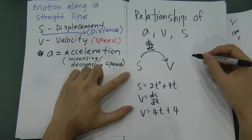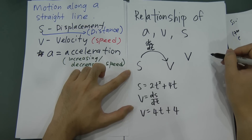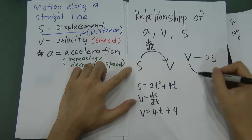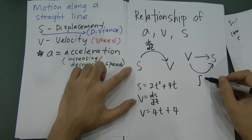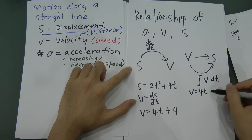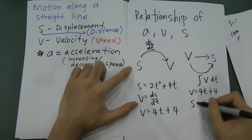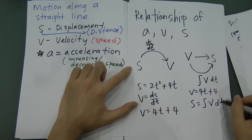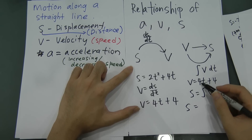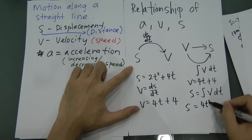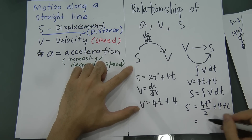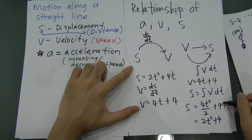Conversely, if given velocity v and asked to find displacement s, integrate: s = ∫v dt. For example, if v = 4t + 4, then integrating gives s = 2t² + 4t + C. Integrate velocity to get displacement.